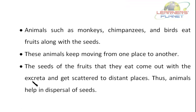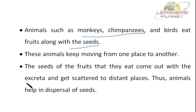There are other animals too, such as monkeys, chimpanzees and birds, that eat fruits along with the seeds. These animals keep moving from one place to another, so the seeds of the fruits they eat come out with the excreta and get scattered to different or distant places, helping in dispersal of seeds. There are seeds of cocklebur too, which stick to the animal's fur and when the animals move around, they are transported to far-off or distant places.